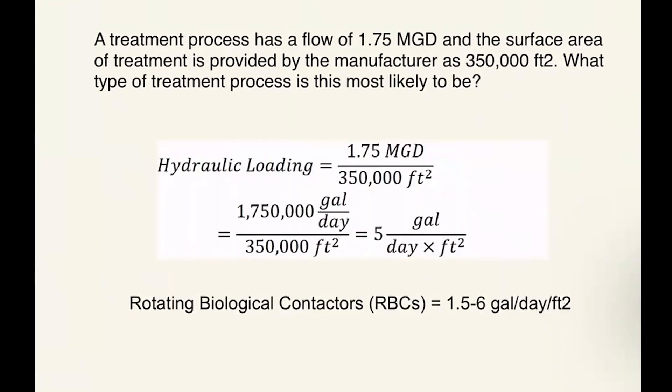As you can see, we set up the problem beforehand. We did the same thing. We converted 1.75 MGD to 1,750,000 gallons per day, and same thing is equal to 5 gallons per day per foot square. Now, this falls in the range of our 1.5 to 6 gallons per day per square foot for RBCs. So this most likely would be a rotating biological contactor process.